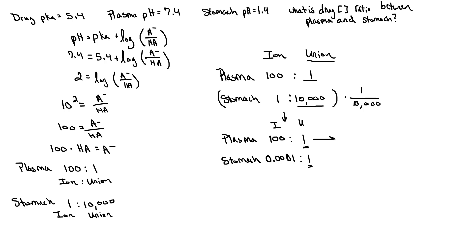So to do this, all we need to do is add up our row. So in this case, for the plasma, we have a total of 101 molecules. And in the stomach, we have a total of 1.0001 molecules.